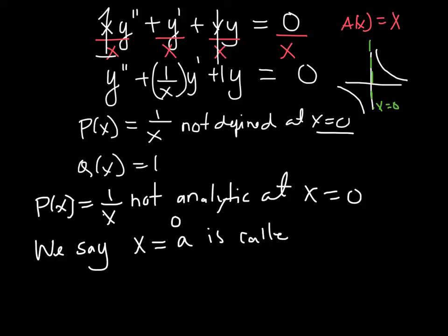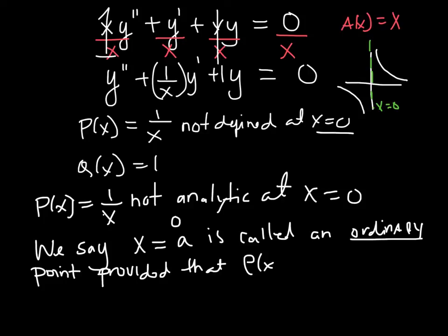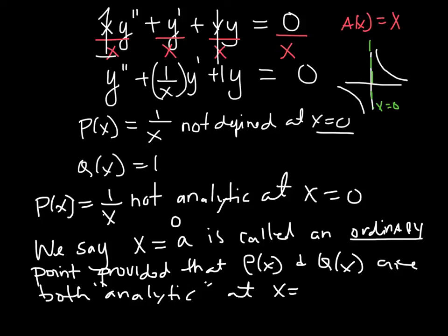But we say x is equal to 0 is called an ordinary point, provided that P(x) and Q(x) are both analytic at x = a, so in this case x = 0.